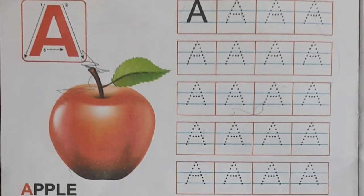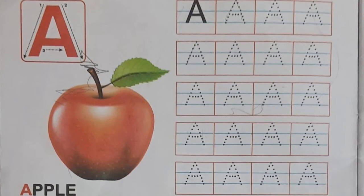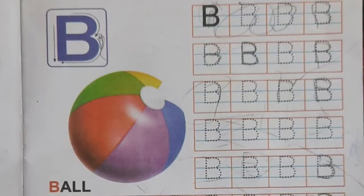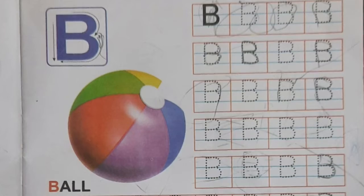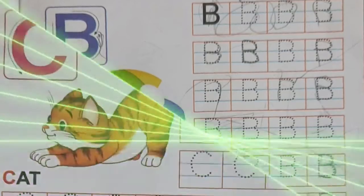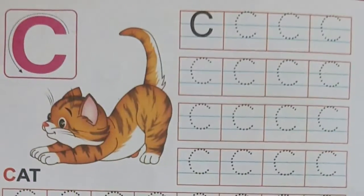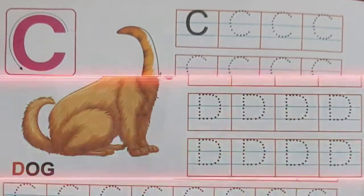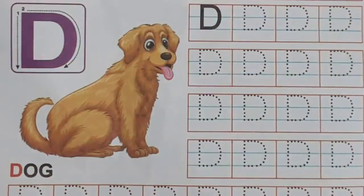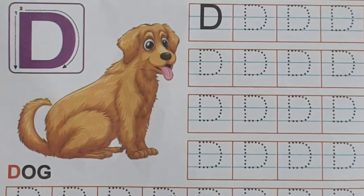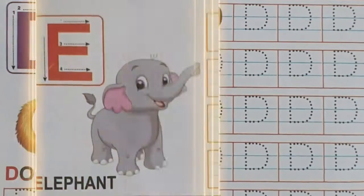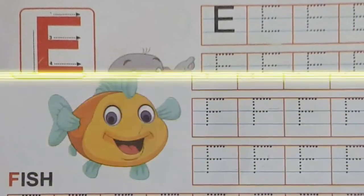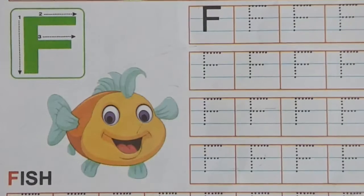A for Apple, B for Ball, C for Cat, D for Dog, E for Elephant.